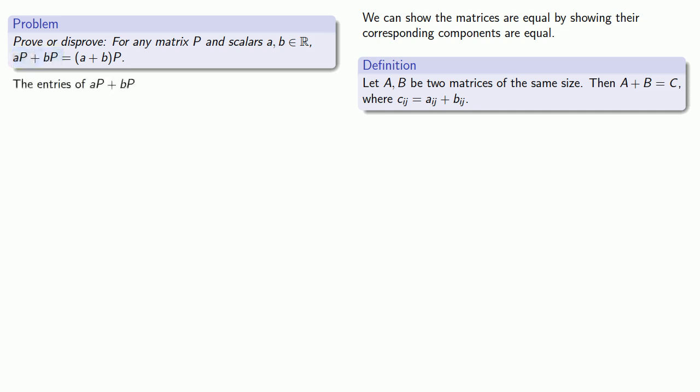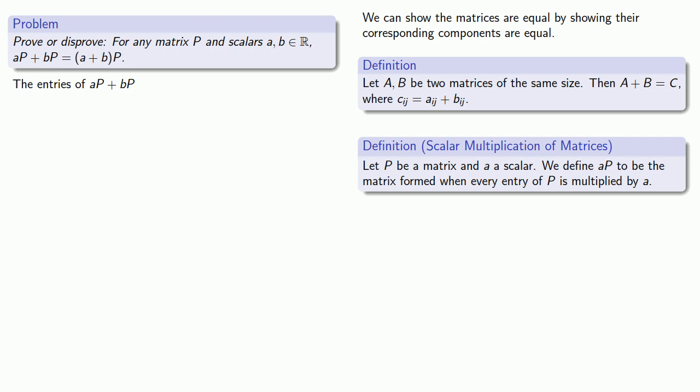Since this is a scalar multiple of the matrix P, then those entries are going to be a times the entries of P. So I get a times some entry p_ij plus b times some entry p_ij. And that's going to be what the entries of the matrix aP + bP are.